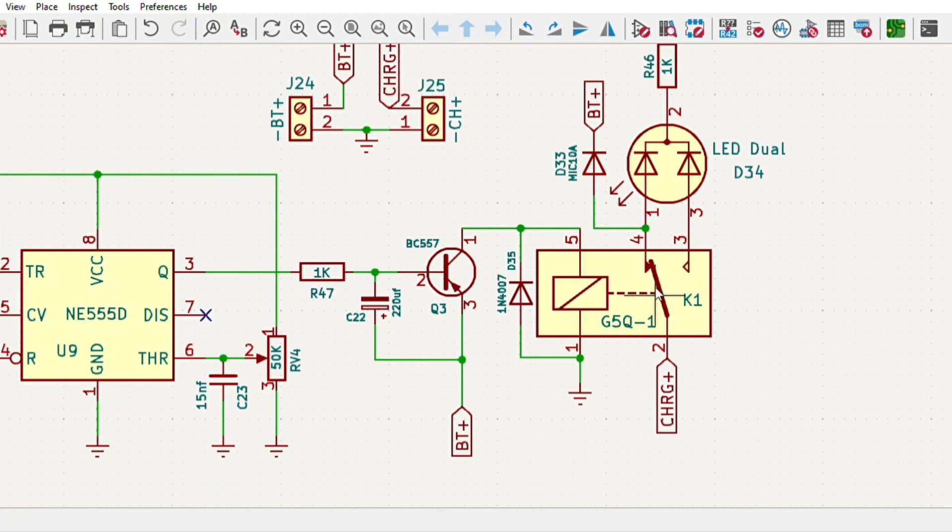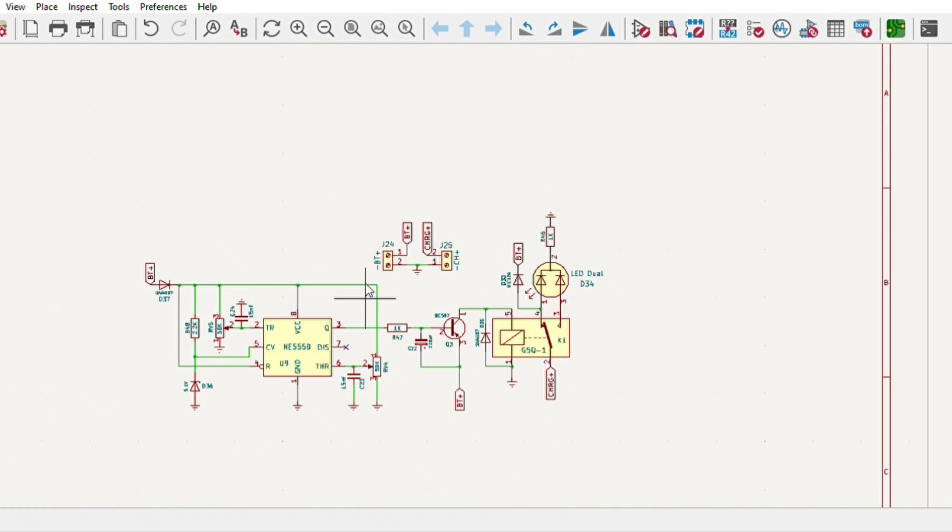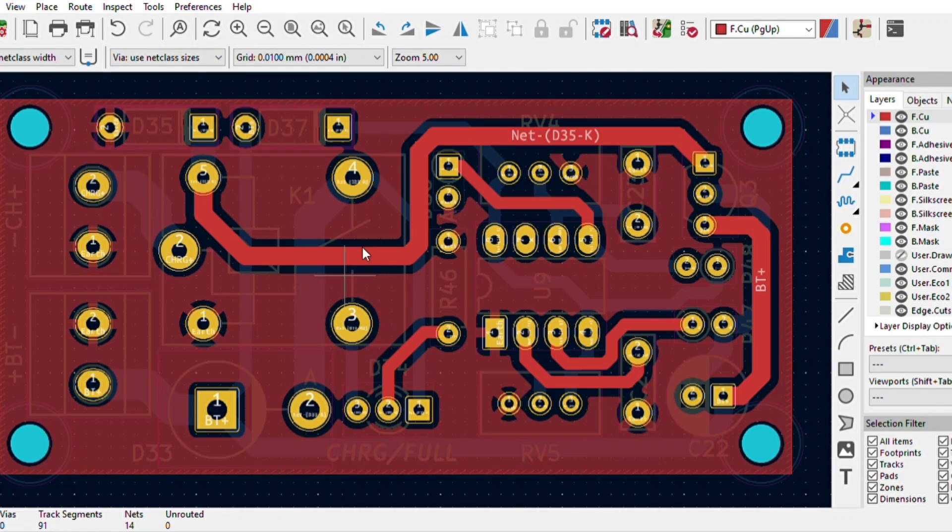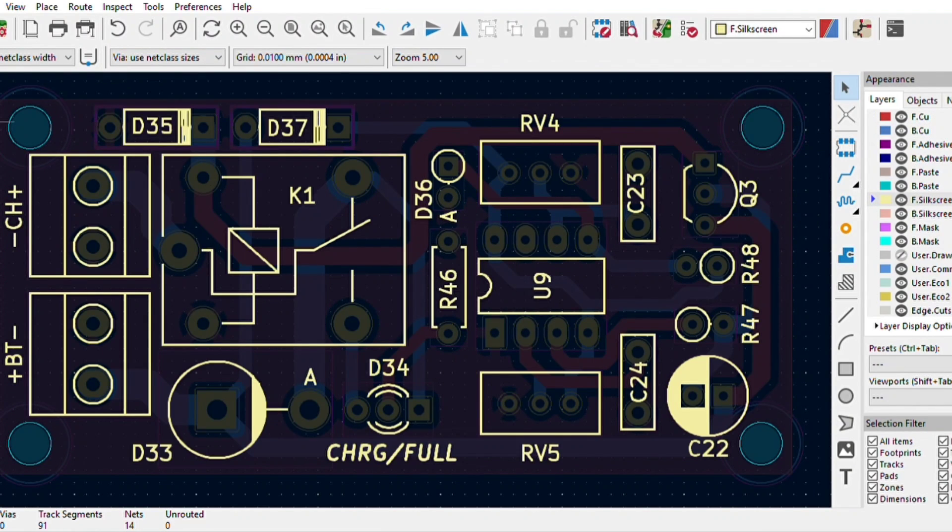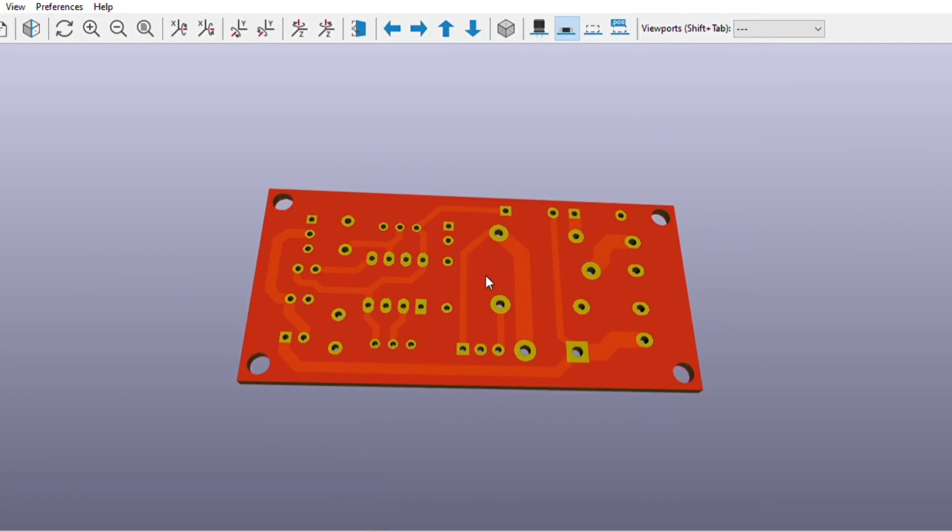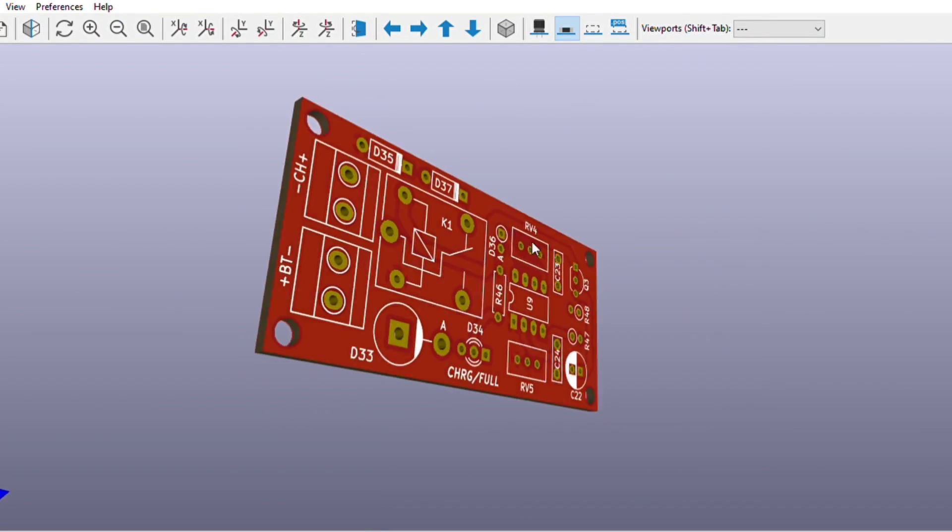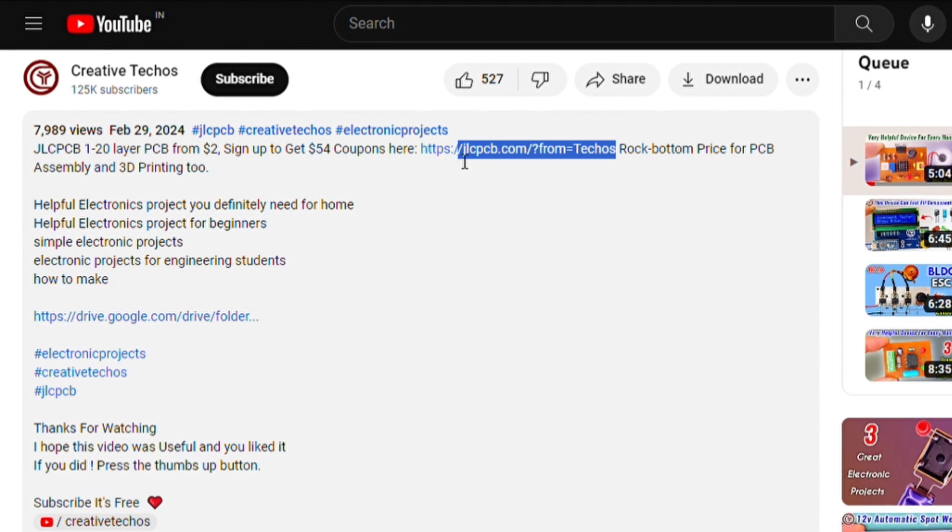For easy assembly of the circuit I converted the schematics into a PCB layout. The PCB is going to look like this. You can download both circuit diagram and PCB files, link is in video description. In order to manufacture this PCB, go to the video description and sign up on JLC PCB.